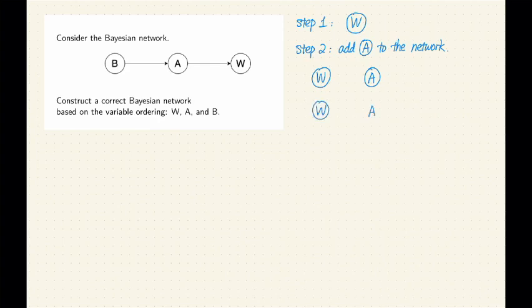But on the other hand, if A is not independent from W, then we need at least W to be A's parent. Given W, A is independent from everything else, but there is no other nodes in the network anyway. These are the only two possibilities given that we only have one node in the network so far before we add A.